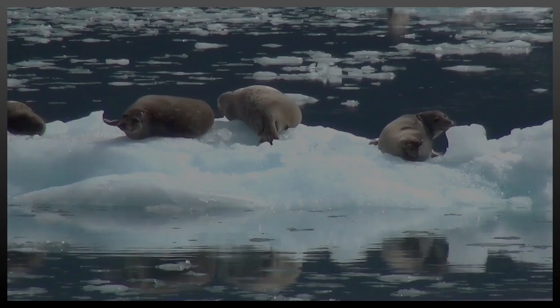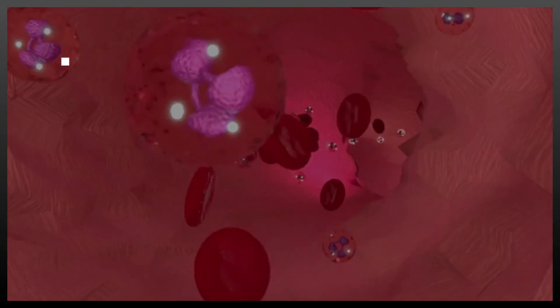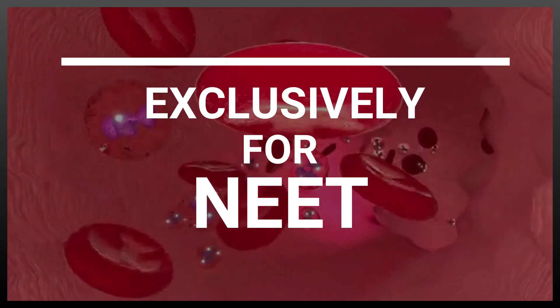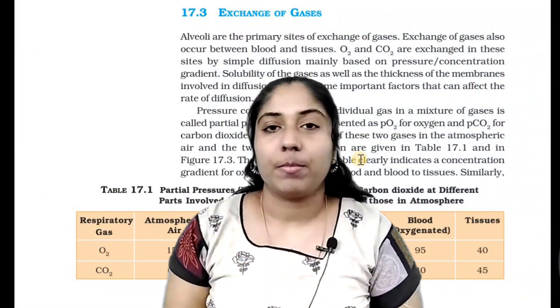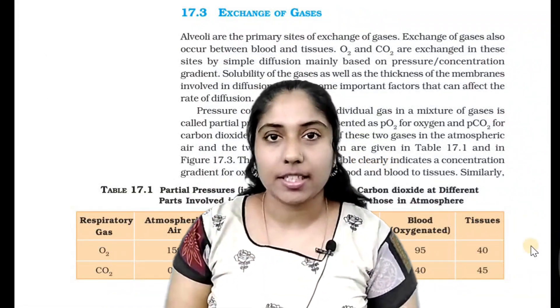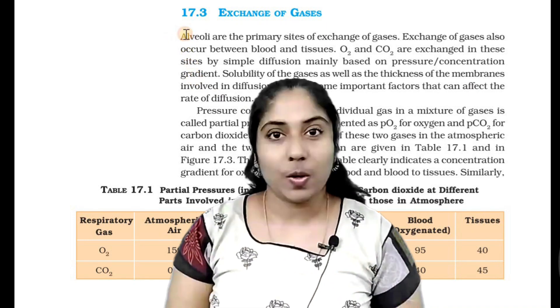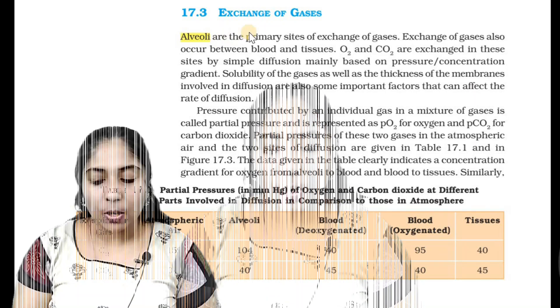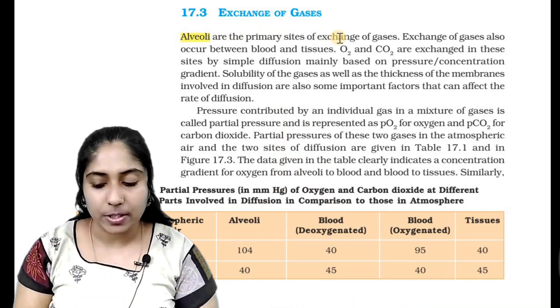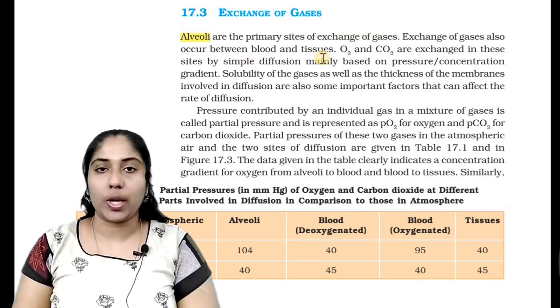This is our class. The main name of the gaseous exchange site is alveoli. Going to the NCERT sentence: Alveoli are the primary sites of exchange of gases. Exchange of gases also occurs between the blood and tissues.